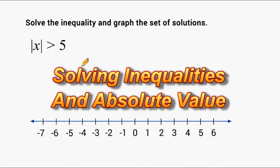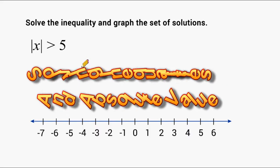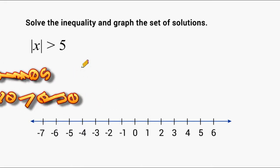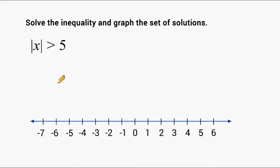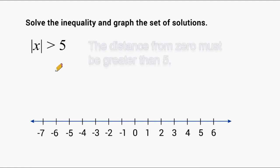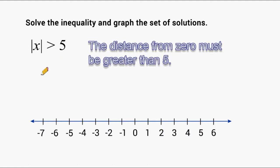Hey, this is Mr. Masonette, and what we're going to do in this tutorial is practice solving and graphing inequalities that involve absolute value. This example reads: the absolute value of x must be greater than 5. Remember, absolute value just means distance away from 0, so what we're saying is that our distance away from 0 must be greater than 5.